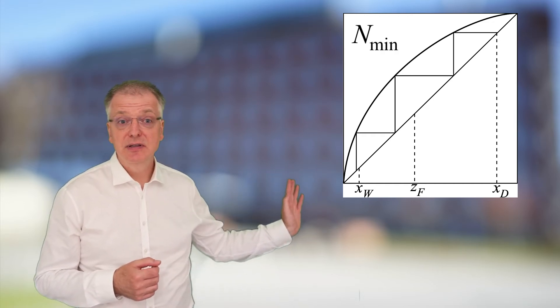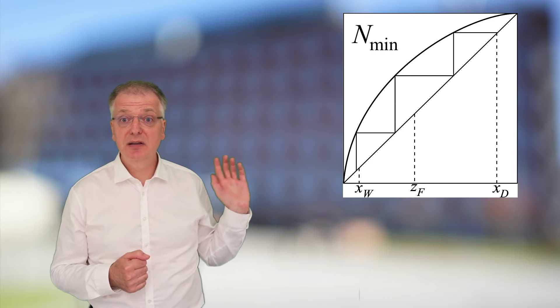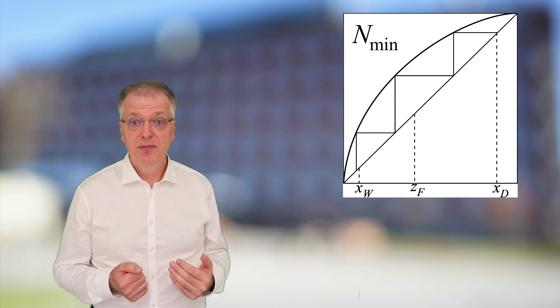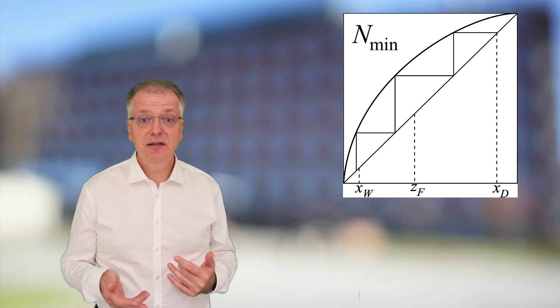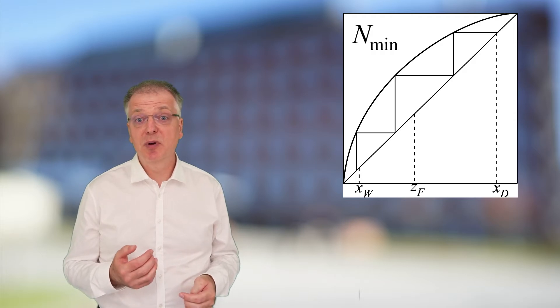Starting at XD, simply draw triangles between the diagonal and the system curve. The number of triangles you get is the minimum number of equilibrium stages.